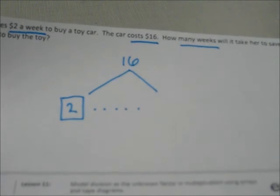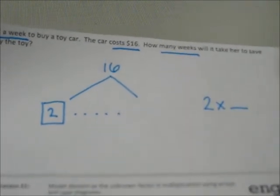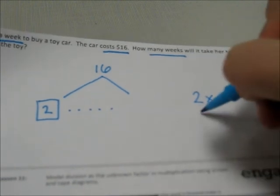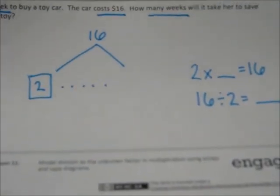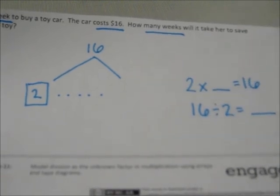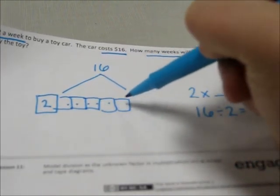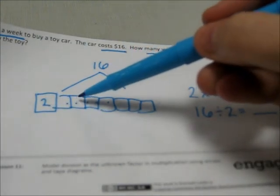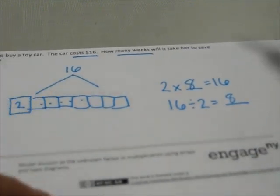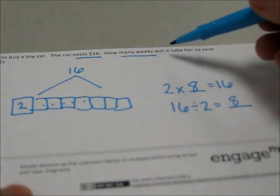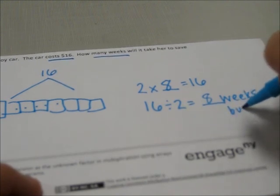Let's think about our number sentence. I could do two times however many groups will get me to sixteen, or sixteen divided by two equals what. A lot of friends prefer skip counting, so let's skip count by twos until we get to sixteen: two, four, six, eight, ten, twelve, fourteen, sixteen — that's one, two, three, four, five, six, seven, eight. Eight boxes — but it's asking how many weeks, so eight weeks to buy the toy.